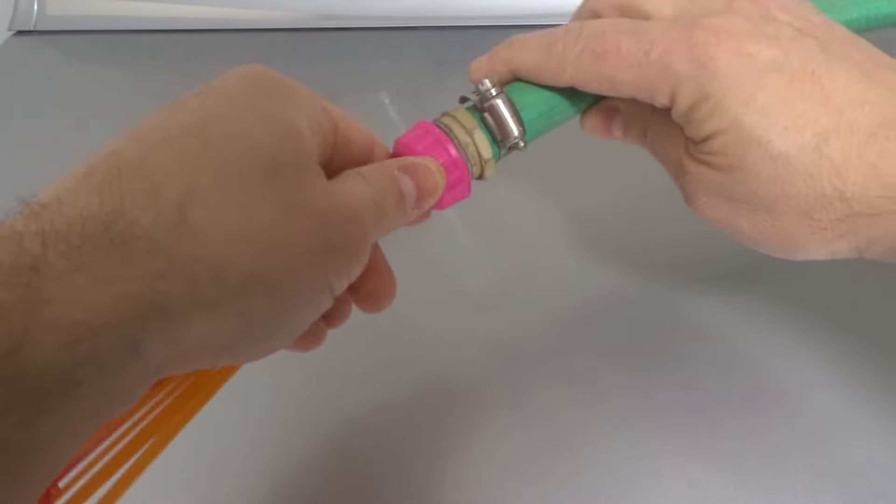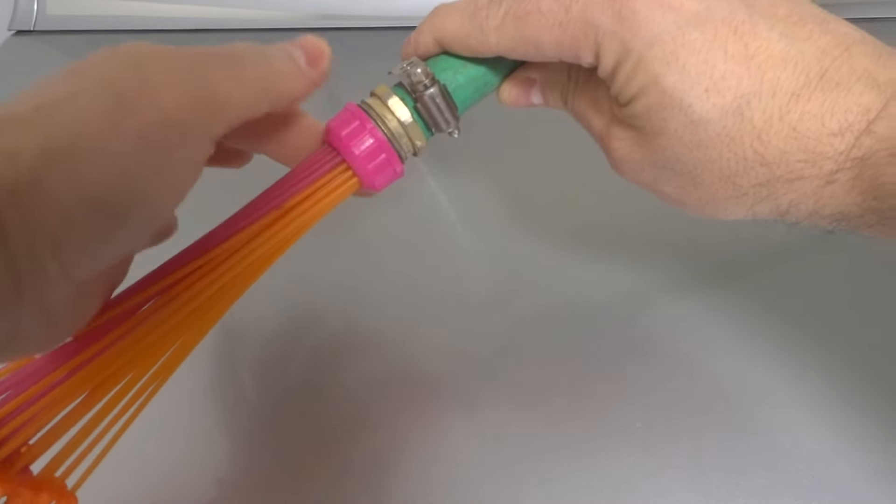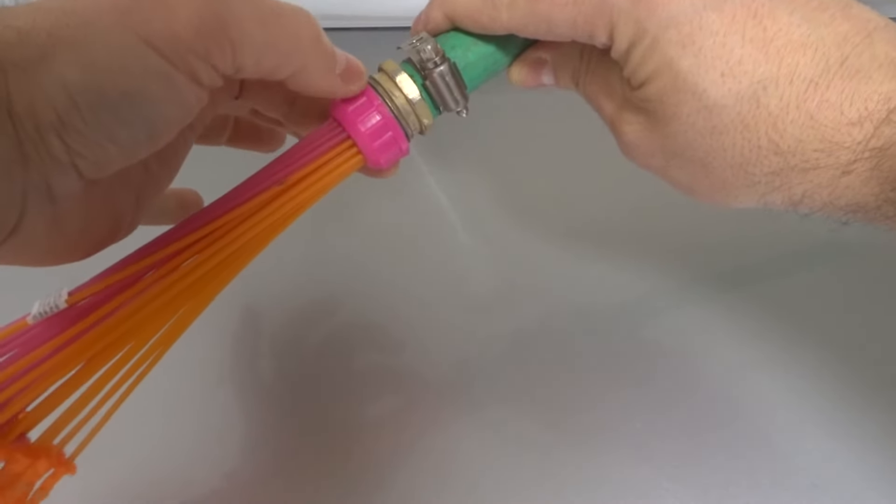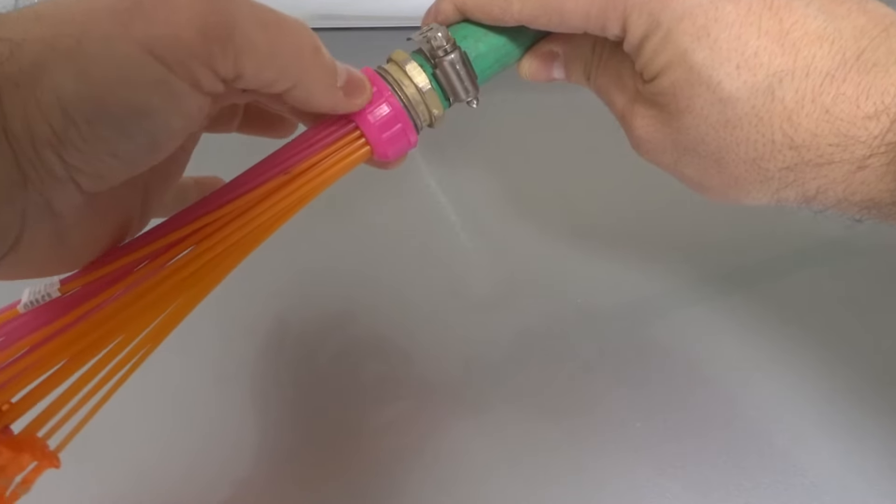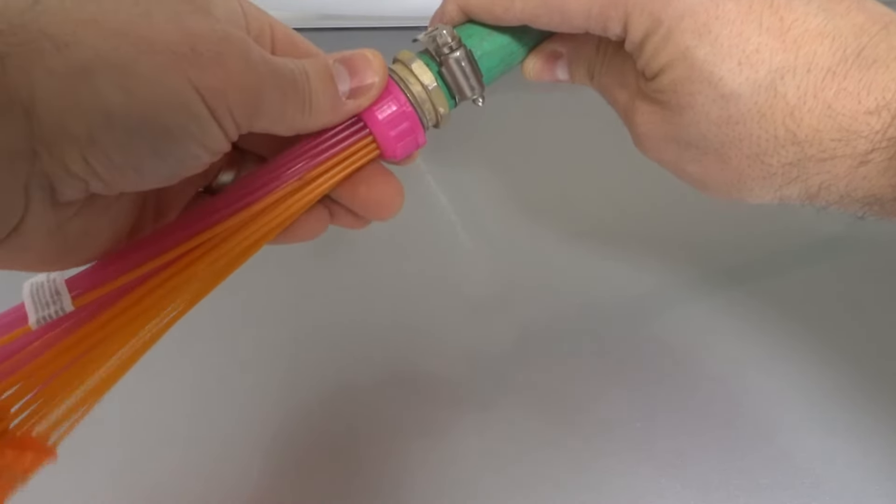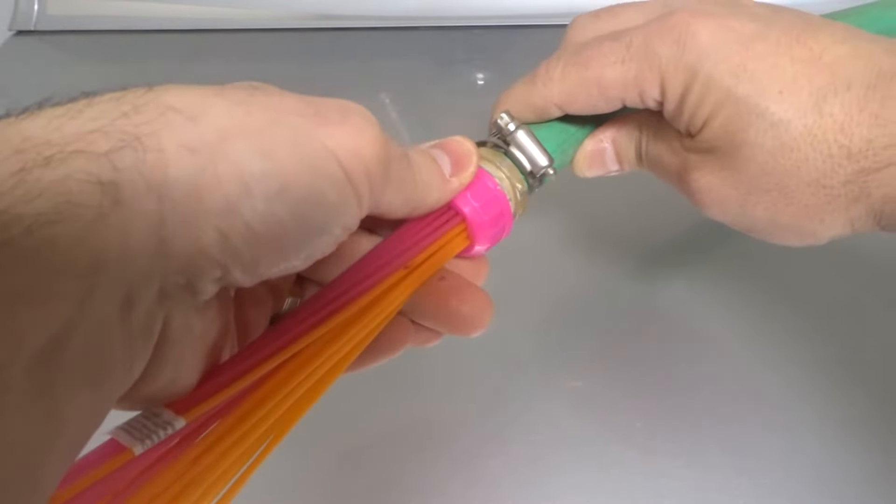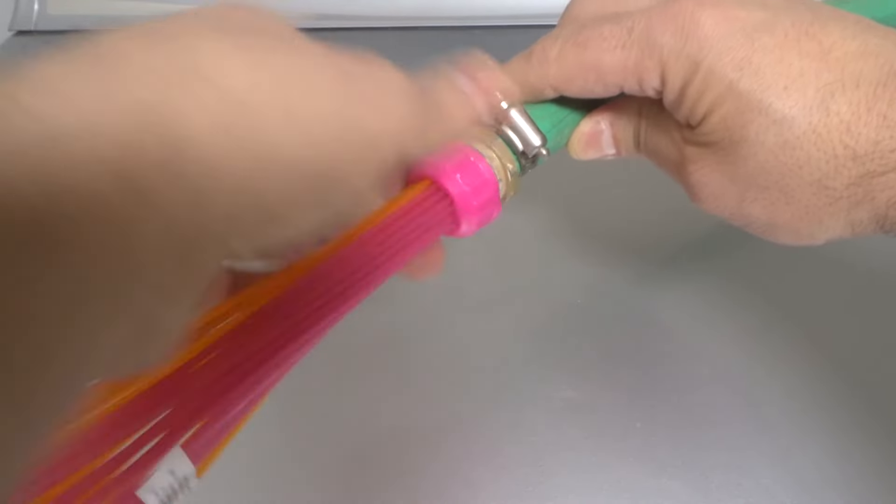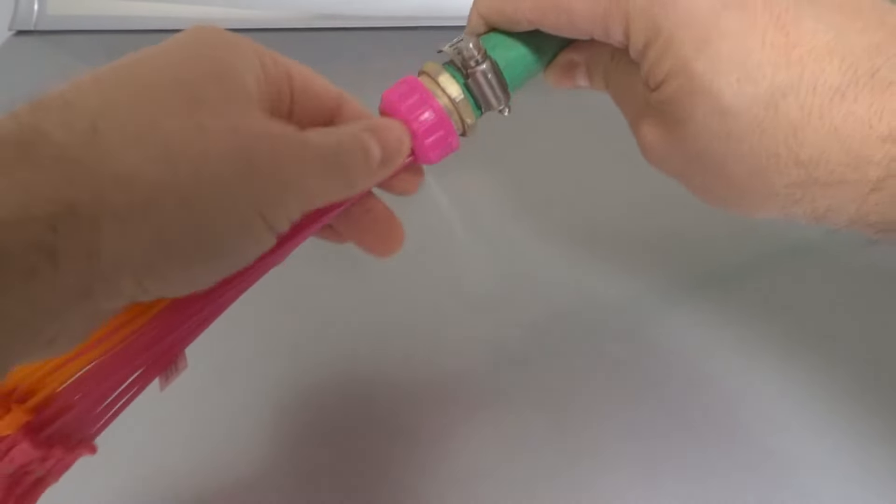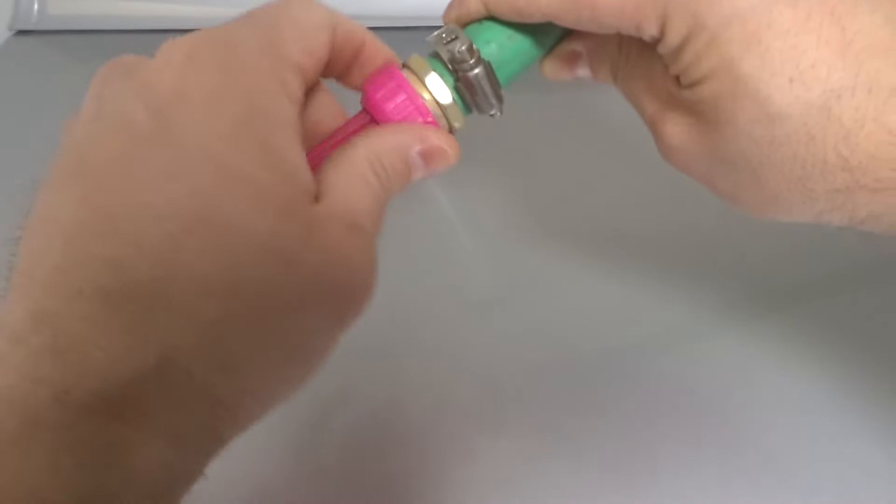So I'm going to take the Bunch O Balloons, I'm going to place it around the hose. You want to make sure that the end right here is around the hose, relatively straight. And then you're going to twist the Bunch O Balloons, when you're looking at the hose like this, you're going to twist them clockwise. And as you can see, we are tightening up onto the hose end.